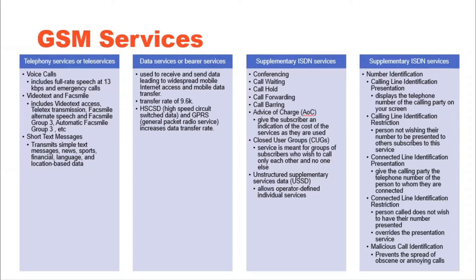Teleservices include standard mobile telephony and mobile-originated or base-originated traffic. Data Services include computer-to-computer communication and packet-switched traffic. User Services may be divided into three major categories: Telephony Services or Teleservices, Data Services or Bearer Services, and Supplementary ISDN Services.